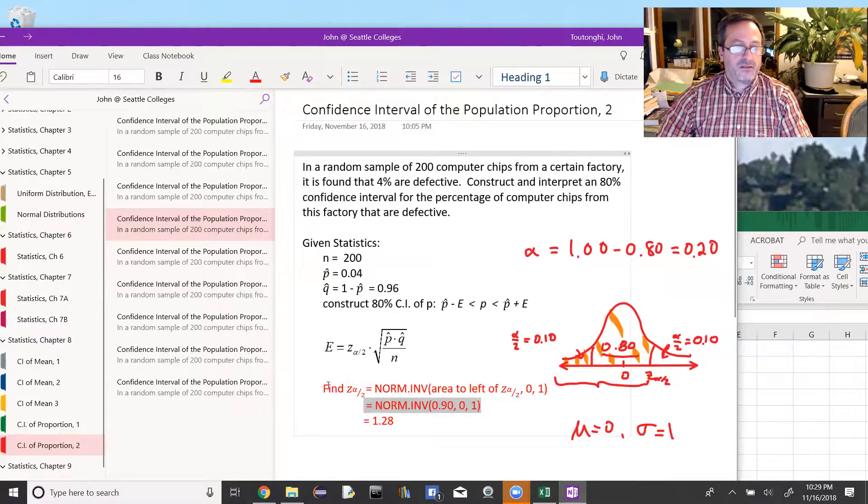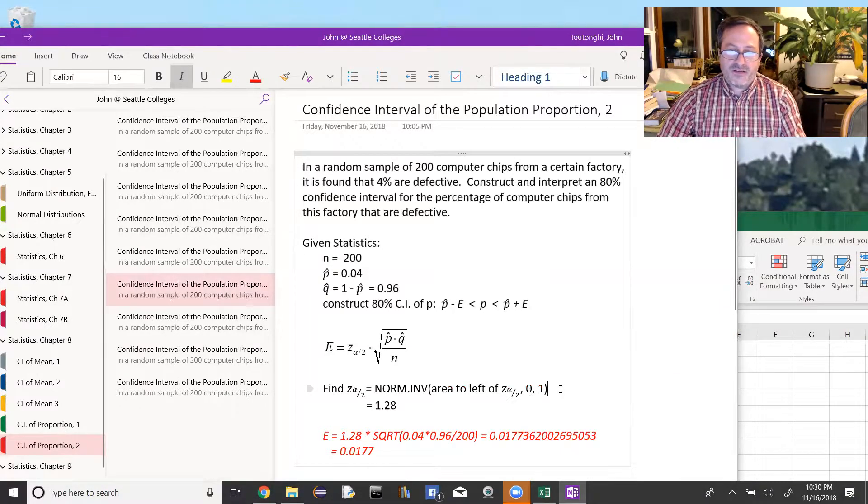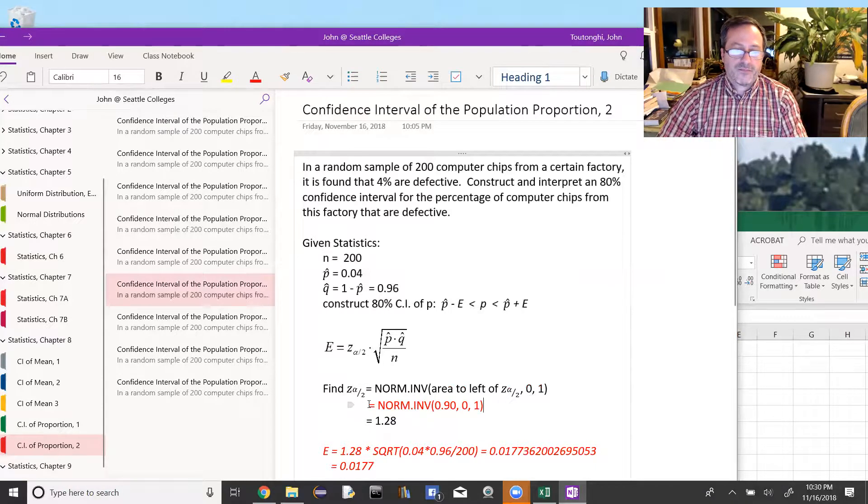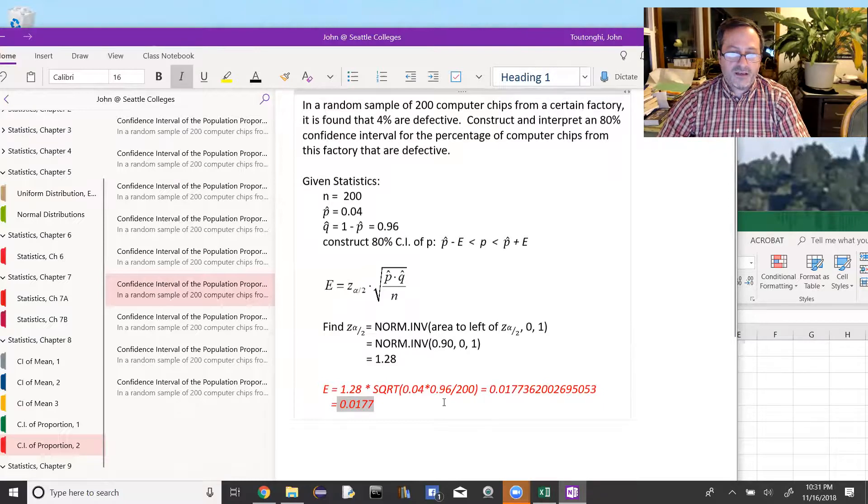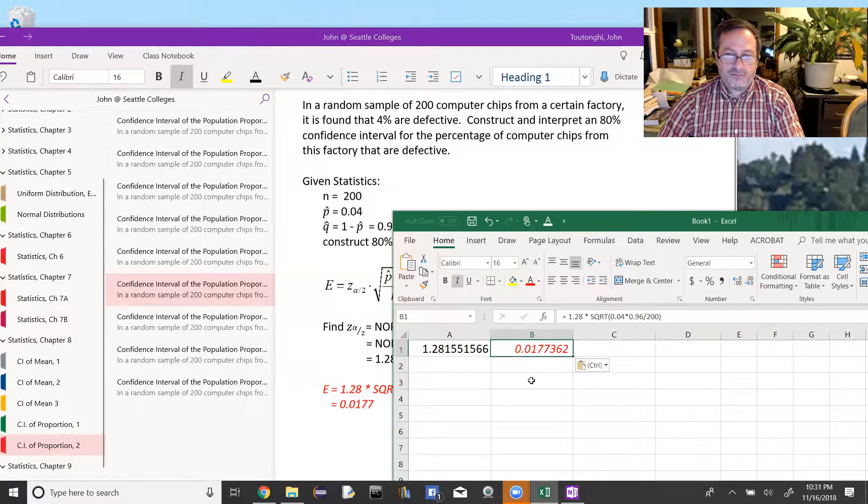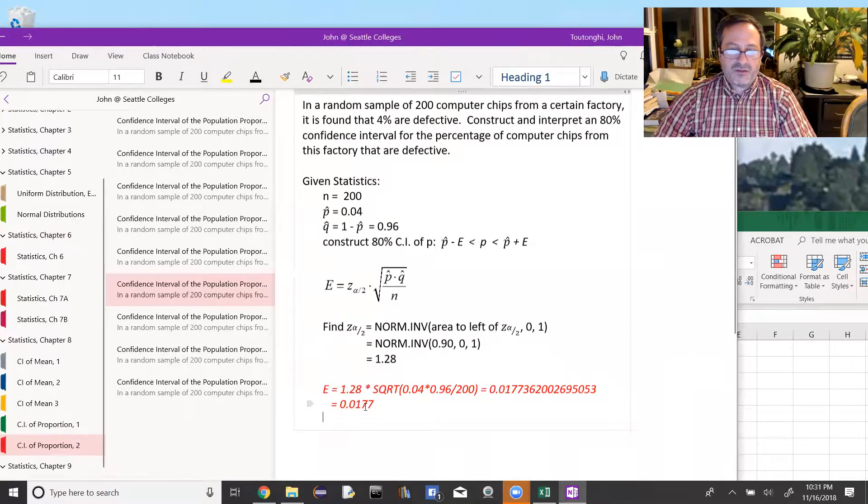The error is given by z alpha over 2, so 1.28 times the square root of p hat times q hat divided by n. I can just notice inside the square root I don't have any parentheses or anything because it does it from left to right, so it'll do that multiplication, then it'll do that division. We don't have to worry about parentheses, we can just type all of that into Excel. And I get 0.0177362 and I'm going to round that to 0.0177.